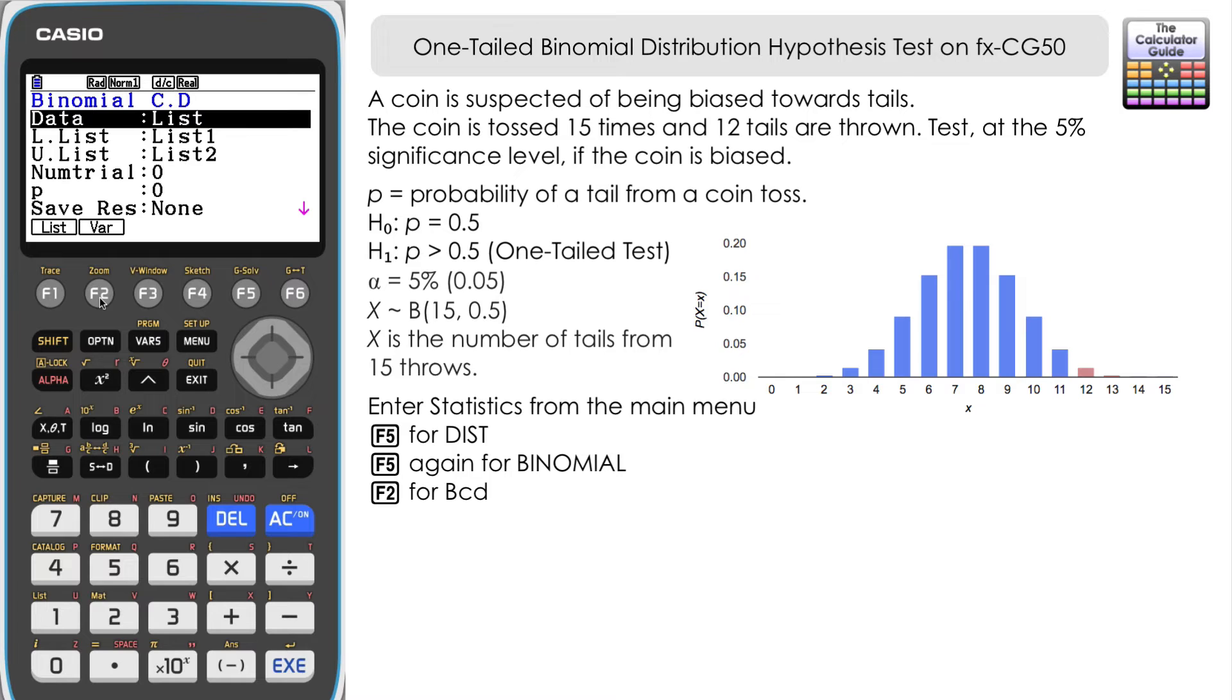We've got lots of different things to fill in. First, change it from a list because we want to use the variable at this stage. Press F2 for the data line. We want that to be variable. Notice how that's changed the next two categories to lower and upper.